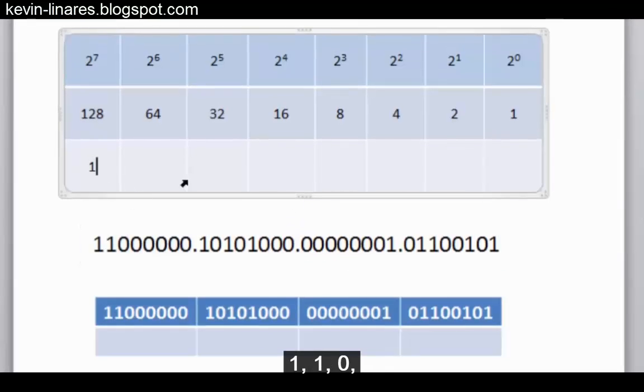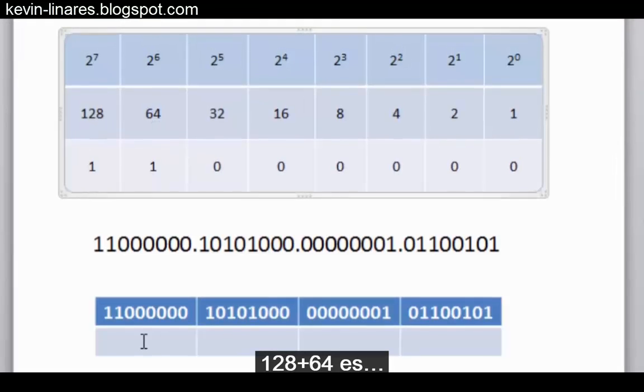We can see that 11000000, 128 plus 64 is 192.